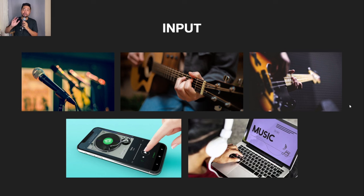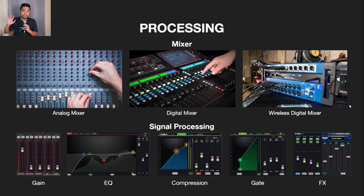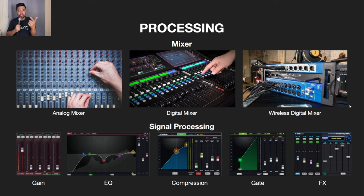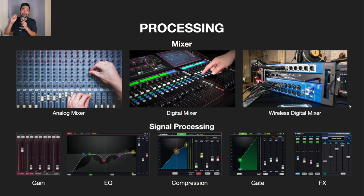Now let's go to the cables. There are two types of cables: unbalanced cables and balanced cables. Unbalanced cables are for our instruments — that's why they're also called instrument cables. Balanced cables, on the other hand, are for our microphones — that's why they're called microphone cables. Now, unbalanced cables are for instruments and for short cable runs only — maximum of 5 meters. Balanced cables are for microphones because microphones can handle longer cable runs.